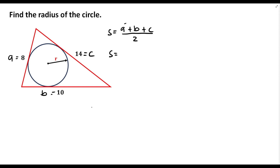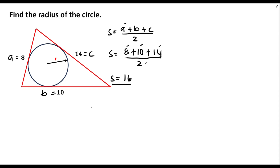So we can solve the semi-perimeter now. Side A is 8, plus B which is 10, plus C which is 14, then divide by 2. So 8 plus 10 is 18, plus 14 is 32, and 32 divided by 2 gives us a semi-perimeter equal to 16.